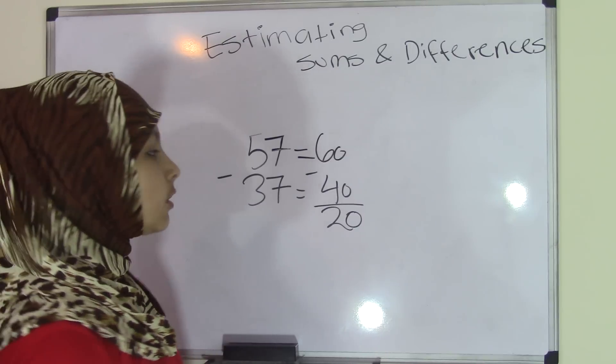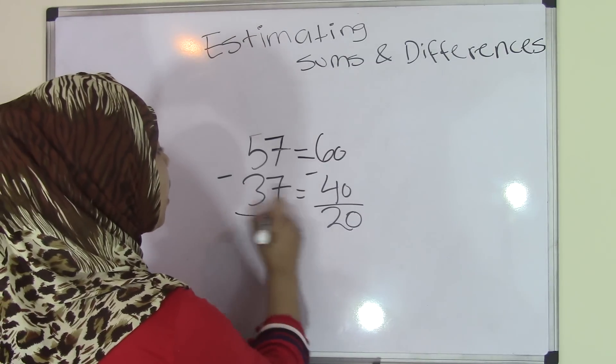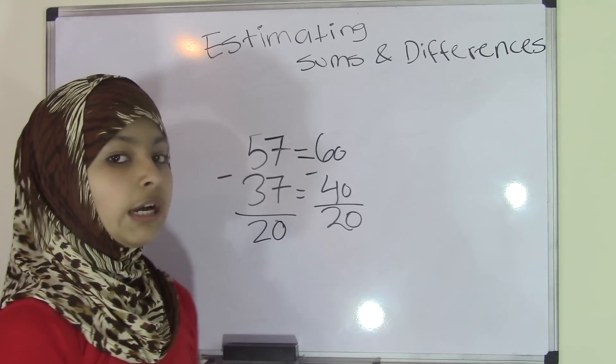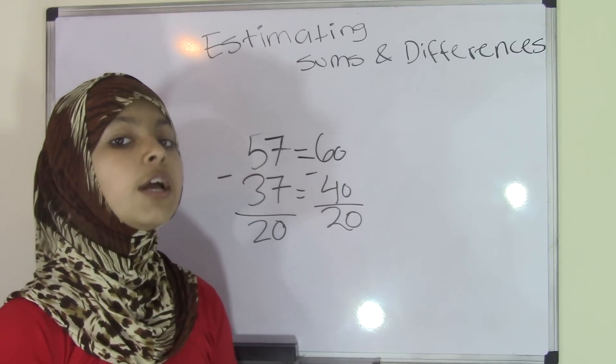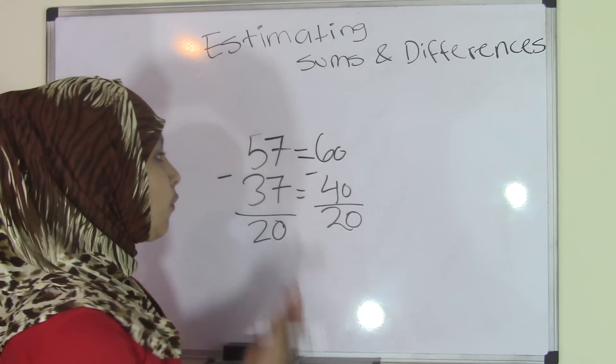Now, to check your answer, you will go back to the original problem, and your answer will equal 20. That's very easy because we know 20 and 20 match up. Therefore, 20 is a reasonable estimate for 57 minus 37.